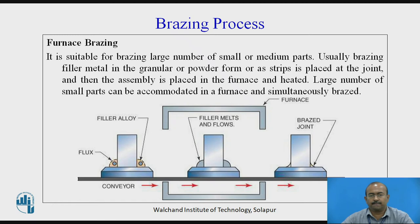Next is furnace brazing. The setup shows a furnace where jobs pre-assembled with flux and filler material are arranged and passed through on a conveyor; brazed finished parts come out the other side. It is suitable for brazing large numbers of small or medium parts. The brazing filler metal in granule, powder, or strip form is placed at the joint, and then the assembly is placed in the furnace and heated. Large numbers of small parts can be accommodated simultaneously.